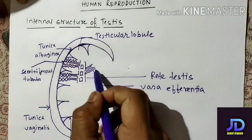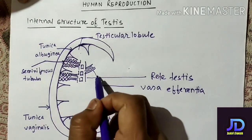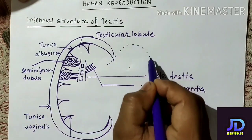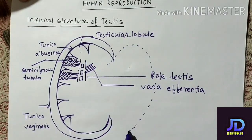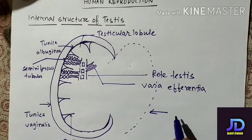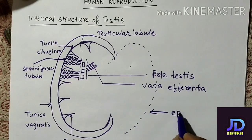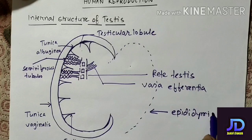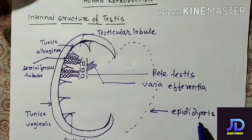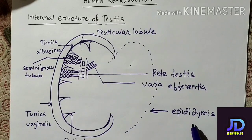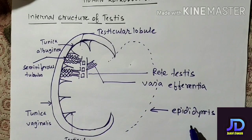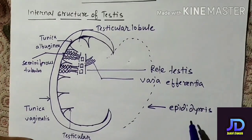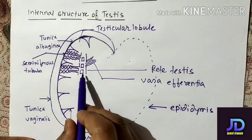The vasa efferentia will open into another fine duct which is known as epididymis. Remember, inside the epididymis the sperms are stored temporarily.